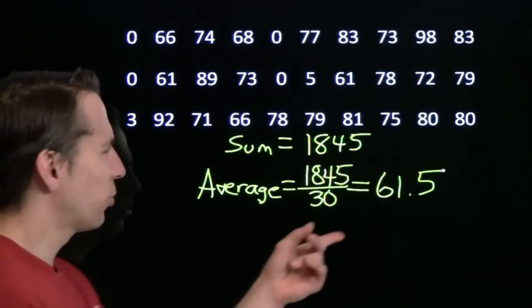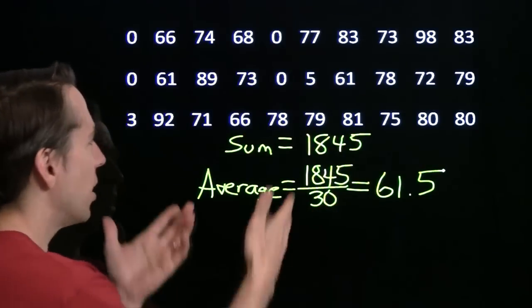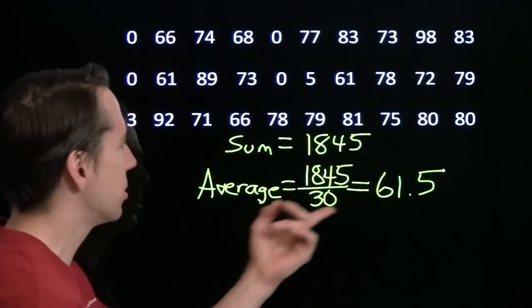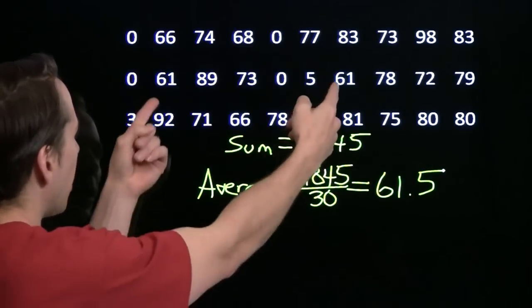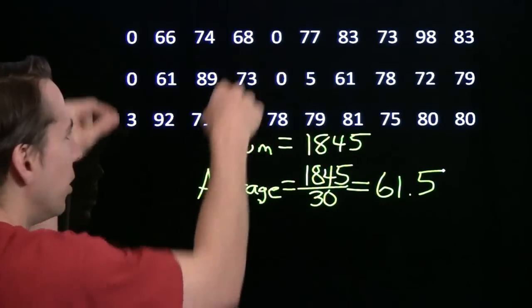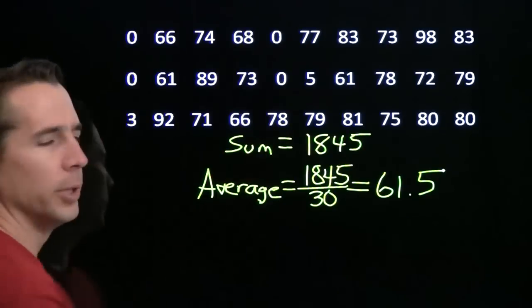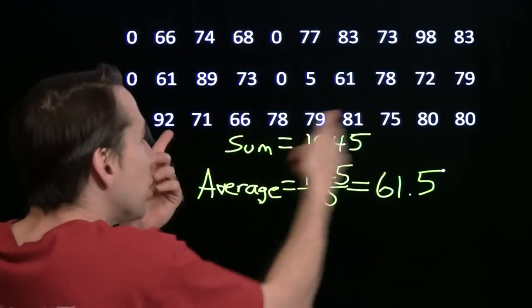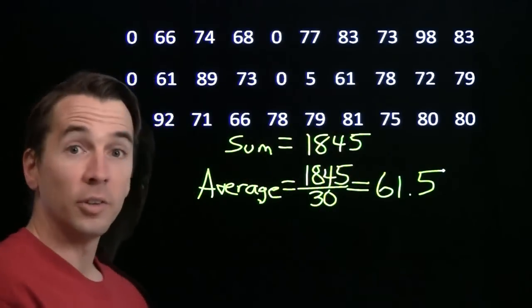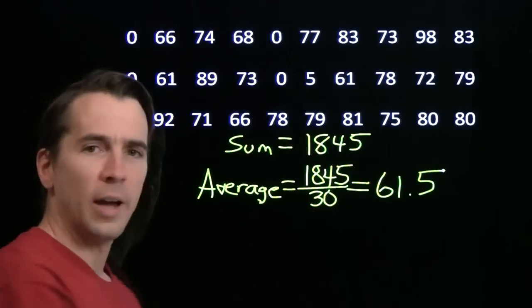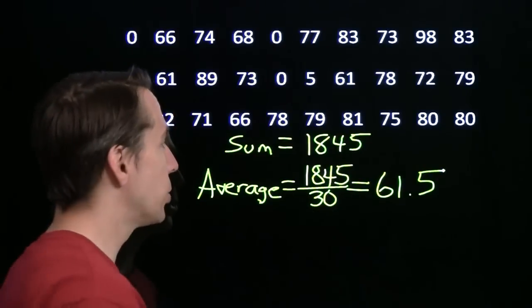Now, I don't think that's really a fair measure of how fast I am. I mean, look at these numbers. Not many of them are less than 61 and a half. You know, you've got a couple 61's there, 3 and a 5, and the zeros. I mean, I get interrupted here all the time. But look at all these higher numbers. There have got to be some other measures of how fast I am. We're going to talk about two more.